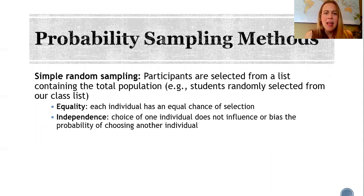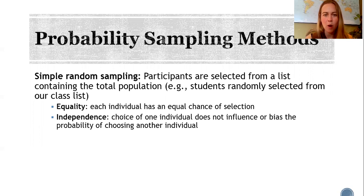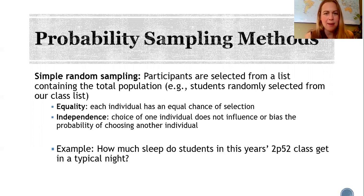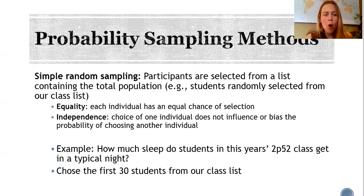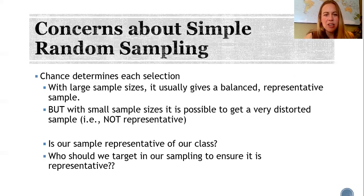Let's start with probability sampling methods. The most basic is simple random sampling, where participants are selected from a list containing the total population — for example, students randomly selected from a class list. Two key features make this method good: equality, where each individual has an equal chance of being selected, and independence, where the choice of one individual doesn't influence the probability of selecting another. For instance, if we're studying how much sleep students in this year's 2P52 class get, we might email the first 30 students and ask about their sleep.